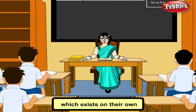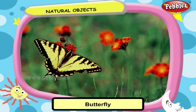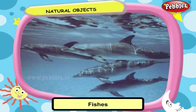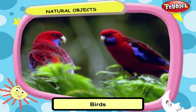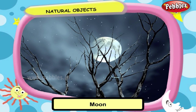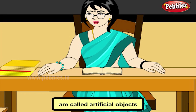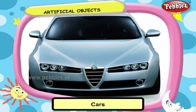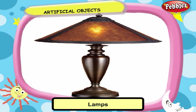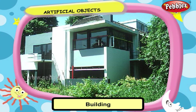The natural objects are those which exist on their own in this world, such as trees, plants, butterfly, fishers, sun, birds and moon. Other objects which are created by man are called artificial objects — they are tables, cars, chair, building, etc.